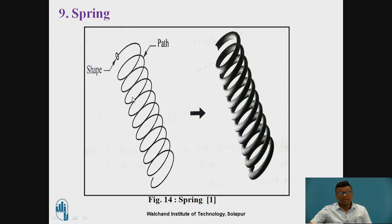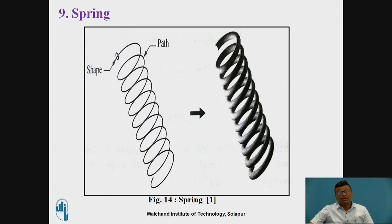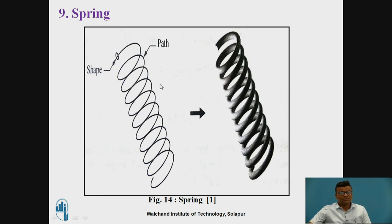Now, the use of these features — suppose you want to create any different mechanical component, you can use pad, pocket, shaft, or loft multi-section solids. We will go directly to the software — we are using the CATIA software here — and will practice some sessions.